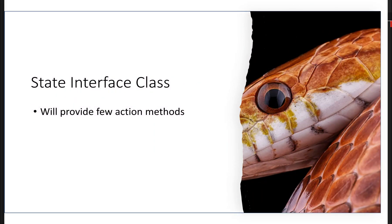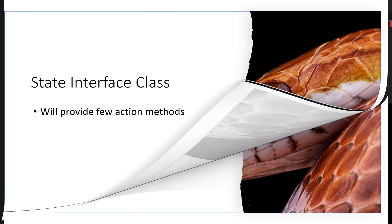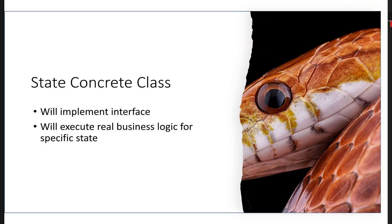The second class is the state interface, where we are going to provide some methods which must be implemented. Those methods will be inherited and implemented by concrete classes. The third class is the concrete state class — for each individual state you will have a separate class and the real business logic for those states will be written there.